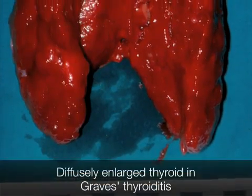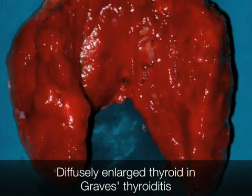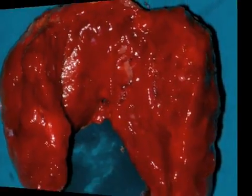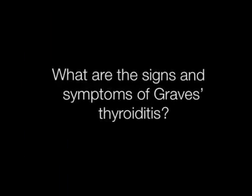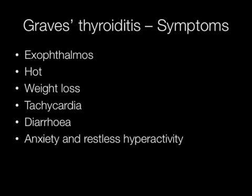This is the diffusely enlarged thyroid gland from a patient with Graves thyroiditis. Symptoms of Graves thyroiditis include exophthalmos or bulging eyes. Patients are hot, suffer weight loss, tachycardia, diarrhoea, anxiety, and restless hyperactivity.